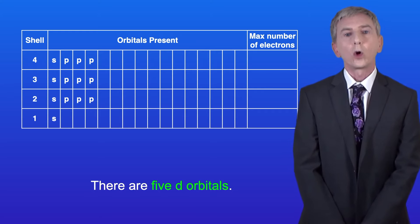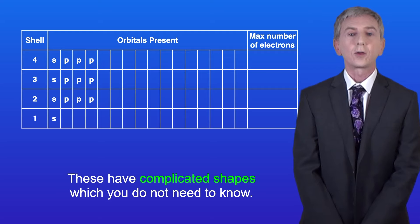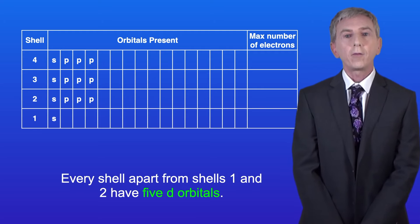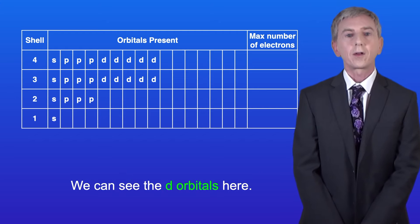Now there are five D orbitals, and these have complicated shapes which you don't need to know. Every shell, apart from shells one and two, have five D orbitals, and we can see the D orbitals here.